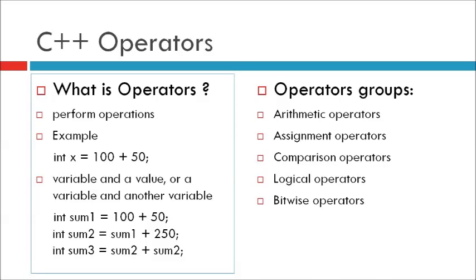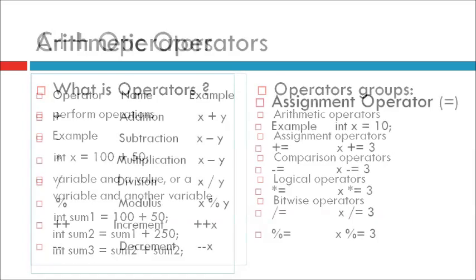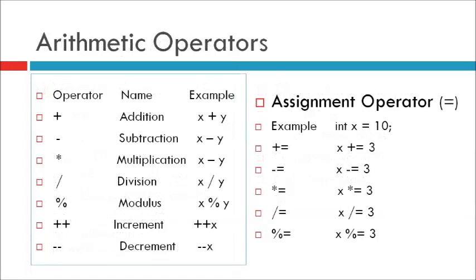C++ divides the operators into the following groups: first, arithmetic operators; second, assignment operators; third, comparison operators; fourth, logical operators; and fifth, bitwise operators. Let's see the arithmetic operators.